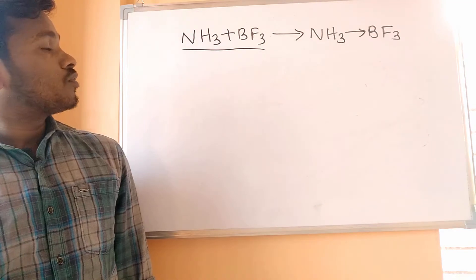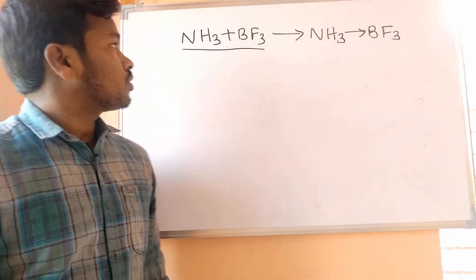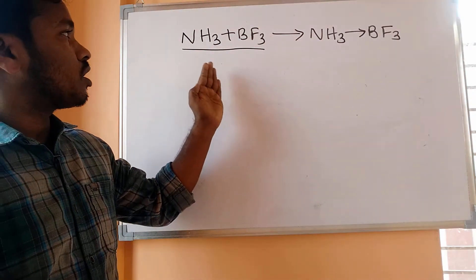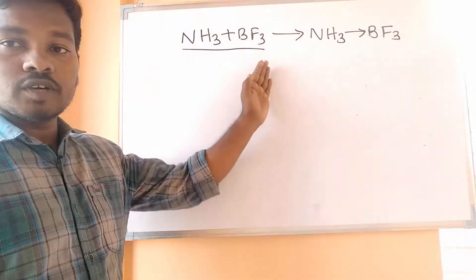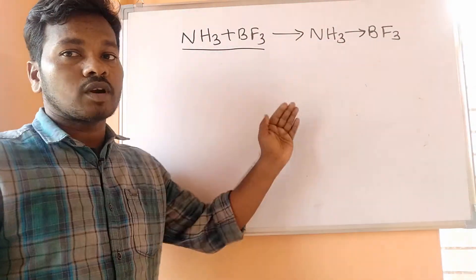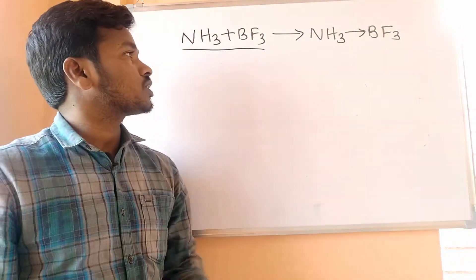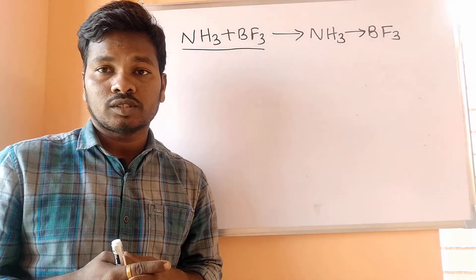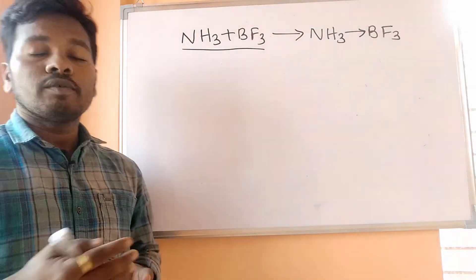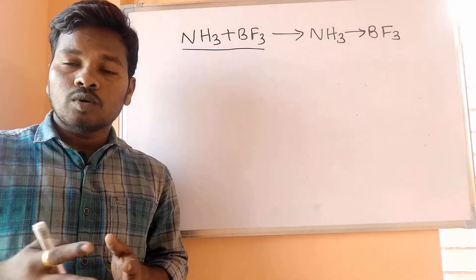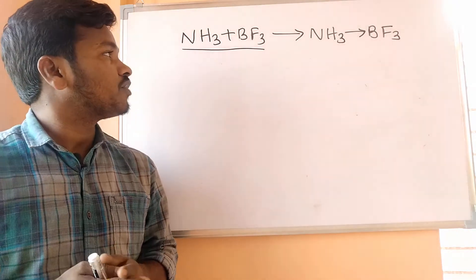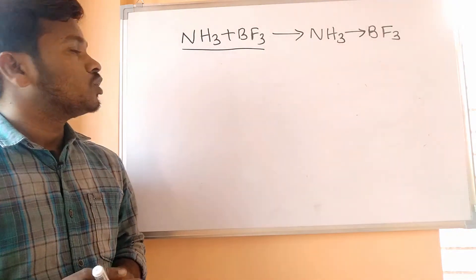Today we have to find out the hybridizations of NH3 and BF3 before undergoing the chemical reaction, and after undergoing the chemical reaction, what will be the hybridizations. There is already a video on how to calculate hybridization — watch that video and you will know how to calculate it very easily.